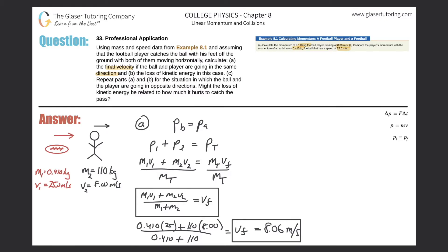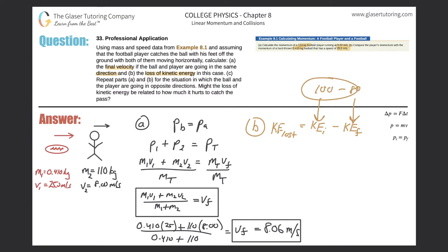Part B asks us to calculate the loss of kinetic energy. A good formula for finding the loss of something is: kinetic energy lost = kinetic energy initial − kinetic energy final. Like a casino analogy: if you started with $100 and ended with $80, you lost $20. The same logic applies here.